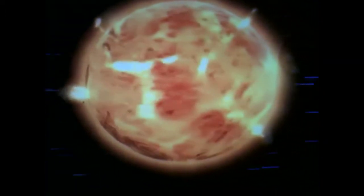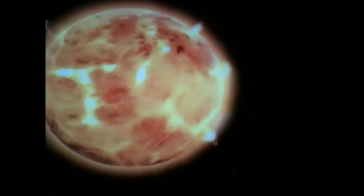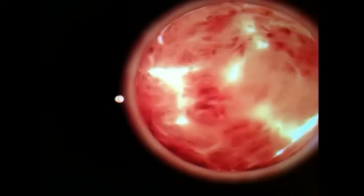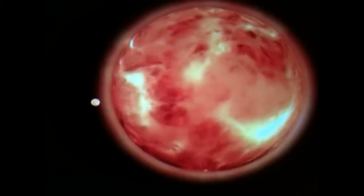By moving our Sun next to Arcturus, we can grasp its immensity. Arcturus is 100 times wider, with a radius 20 times greater than the Sun's.